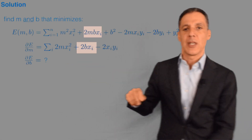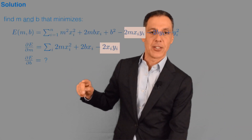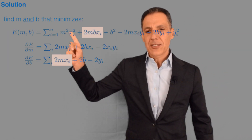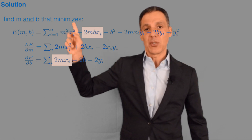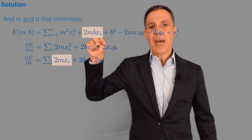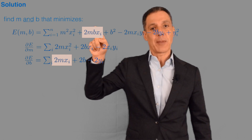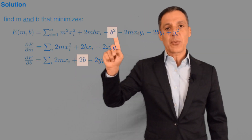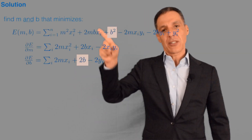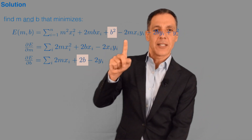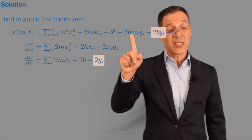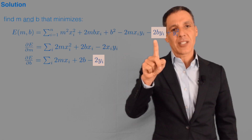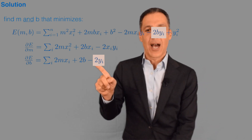Now let's compute the partial derivative with respect to b. The m²·x_i² term has no b, so it's a constant — zero. For 2m·b·x_i: 2m·x_i are constants, and the derivative of b is 1, so we get 2m·x_i. For b² alone: bring the 2 down, giving 2b. The -2m·x_i·y_i term has no b, so it's zero. The y_i² term also has no b, so that's zero too. The -2b·y_i term: derivative of b is 1, giving -2y_i. So that's the partial derivative with respect to b.